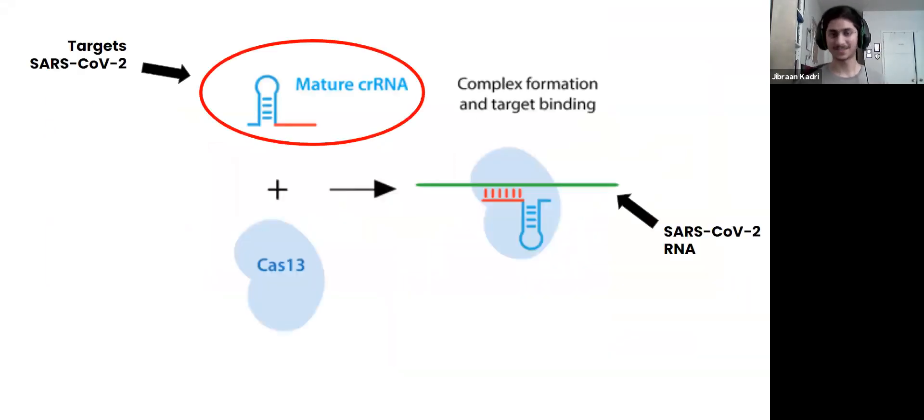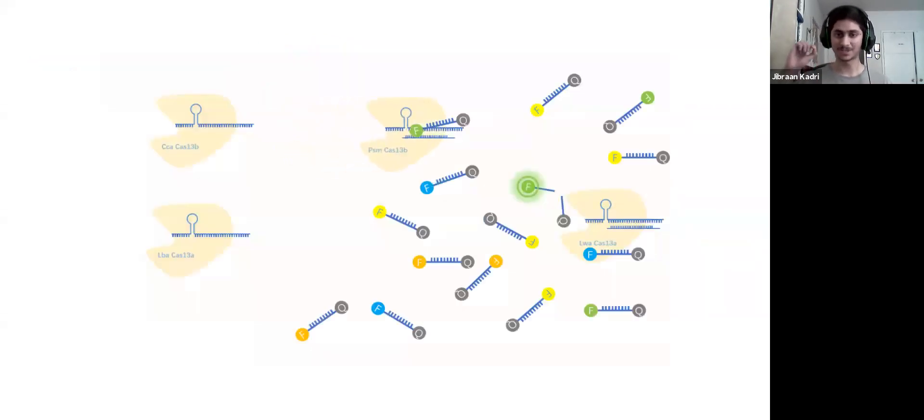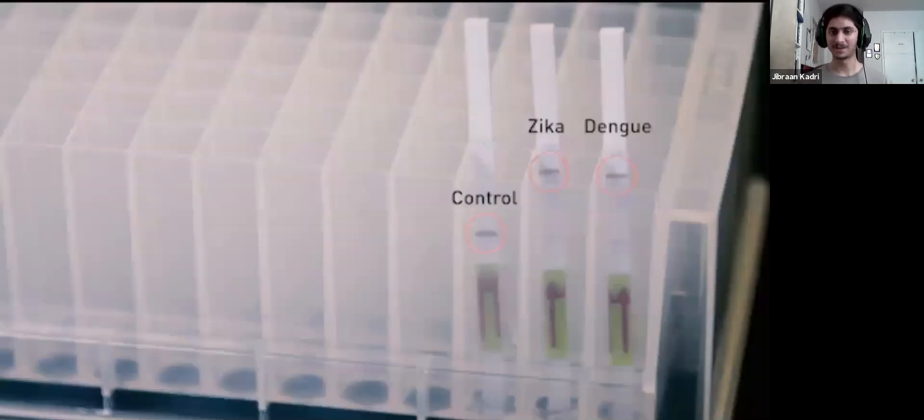Essentially, you have the Cas13 enzyme mixed with a bunch of guide RNAs that target SARS-CoV-2 strands. Essentially, if this complex finds any SARS-CoV-2 strands, it will then make a cut. Now, when Cas13 makes a cut, it also temporarily switches on this sort of cycle mode switch, where essentially everything in that solution, it cuts. So, scientists knowing this ability put a bunch of RNA that, when cut, it made a fluorescent color.